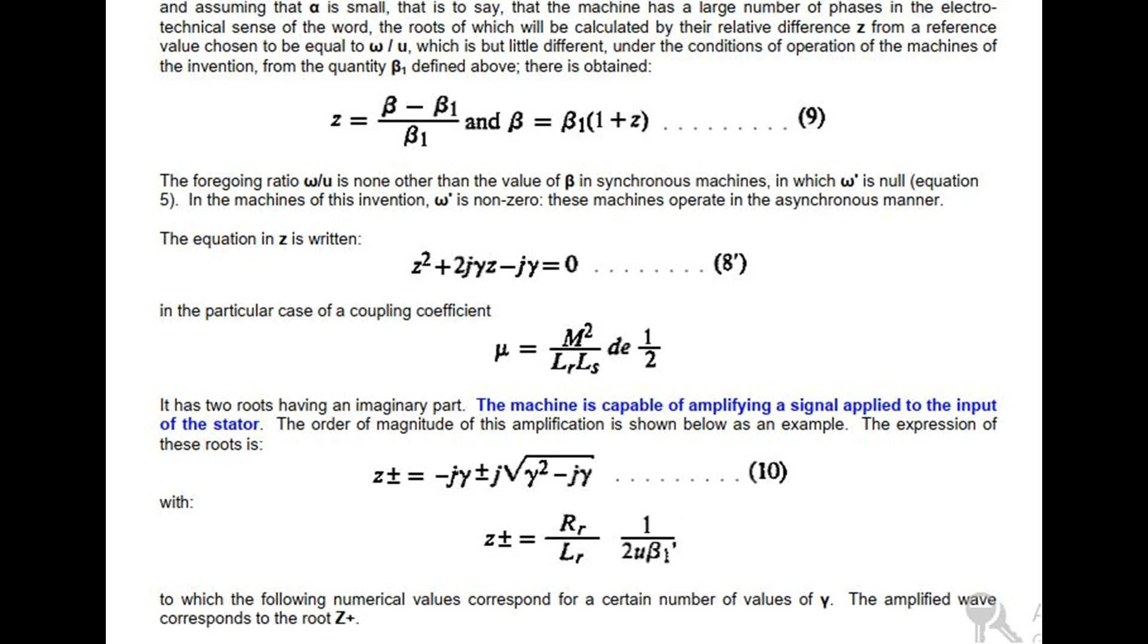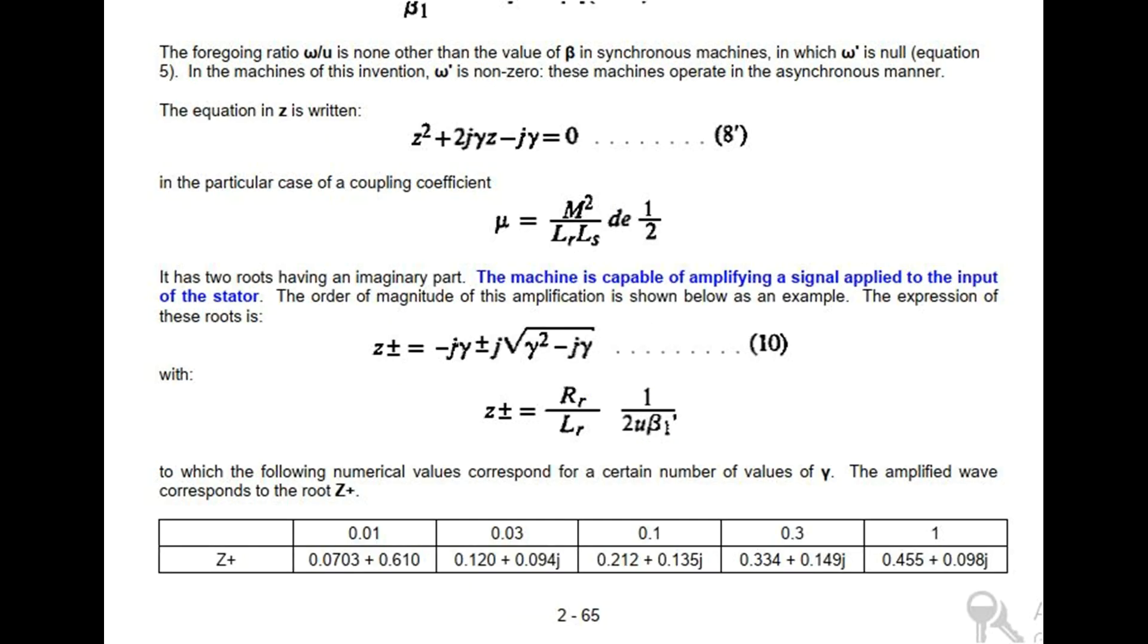In the particular case of a coupling coefficient k = M/√(Ls·Lr) = 0.9, it has two roots having an imaginary part. The machine is capable of amplifying a signal applied to the input of the stator. The order of magnitude of this amplification is shown below as an example. The expression of these roots is given, with numerical values corresponding for a certain number of values of delta.